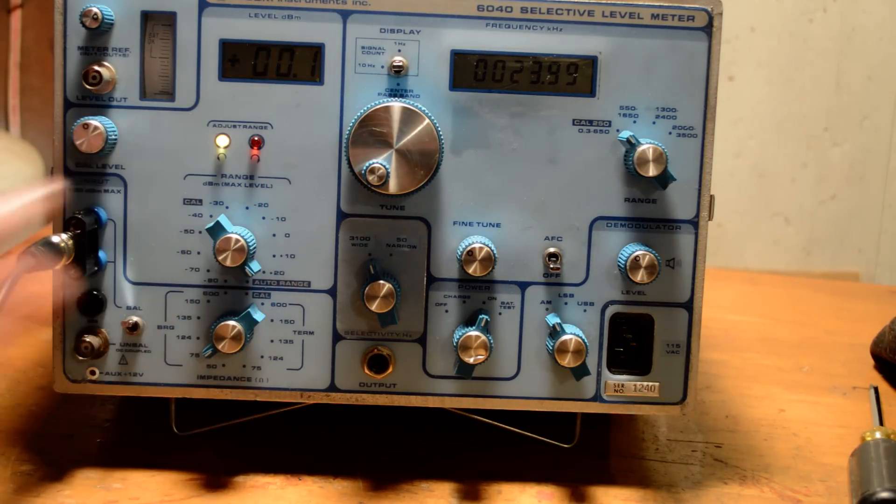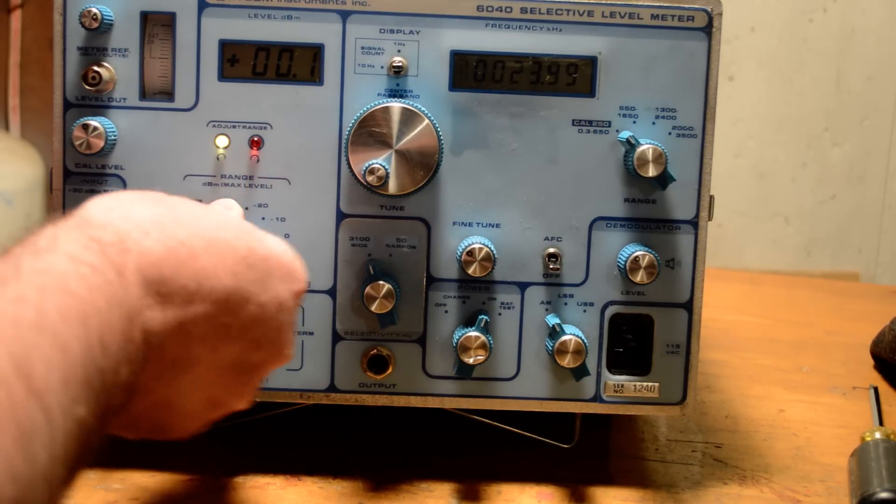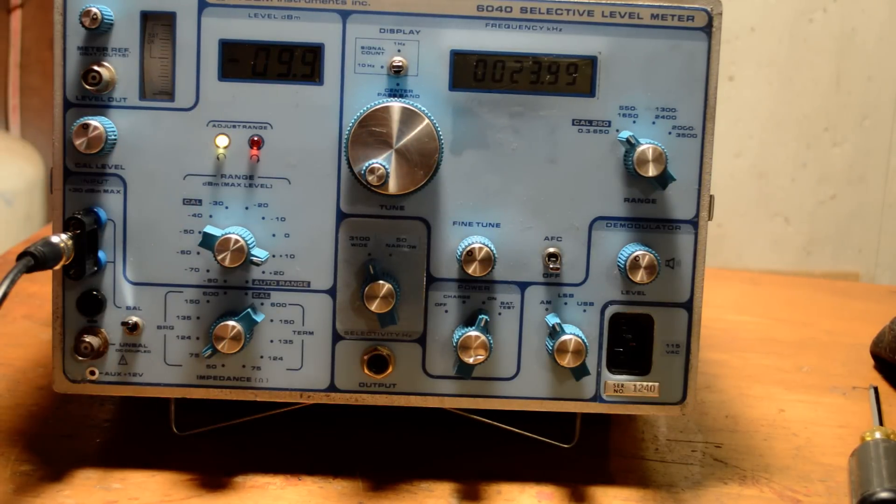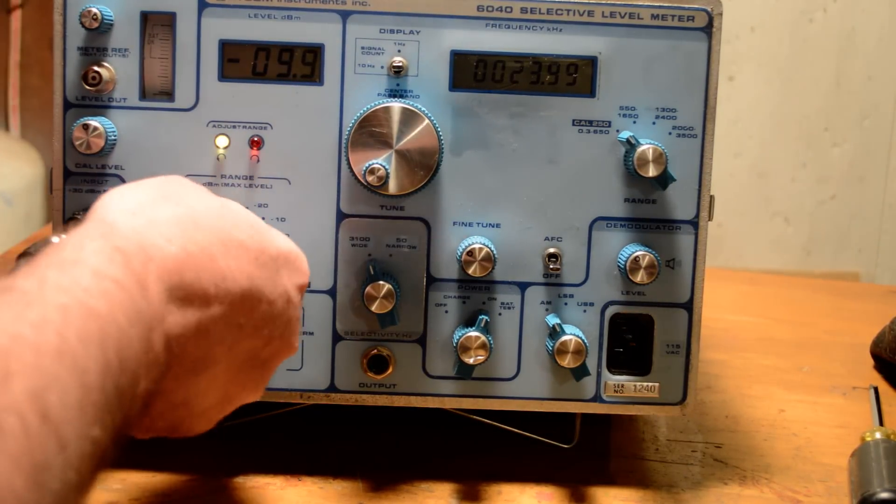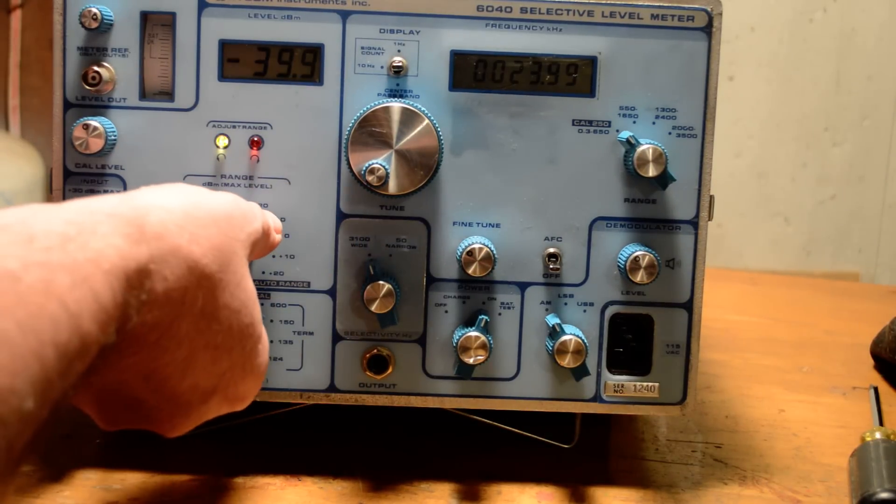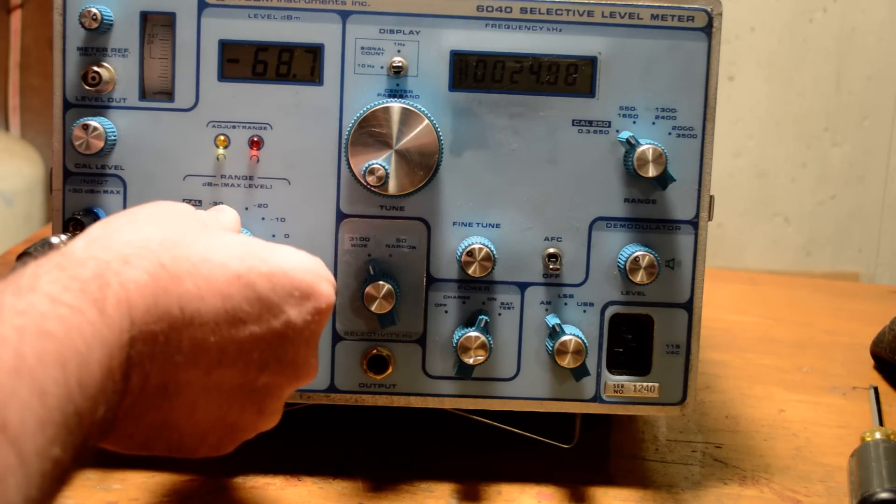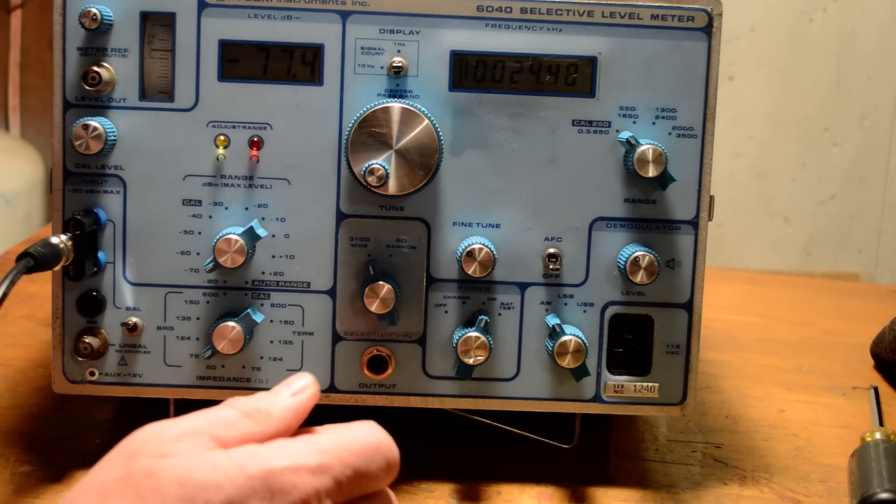I'm going to test the attenuator here. There's a range here for selecting. You can see this yellow light blinking. This is telling me that the attenuation is too high. I'm going to bring this down until that yellow light goes away. Right there.